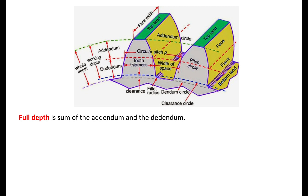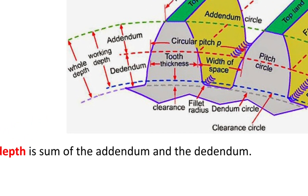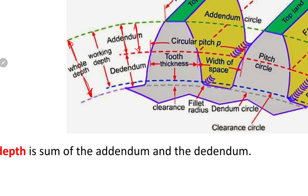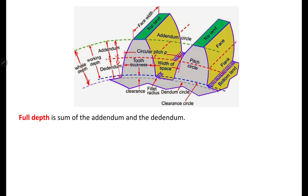Full depth is the sum of addendum and dedendum. If we add the addendum and the dedendum, we get the whole depth or full depth — full depth is also called whole depth.